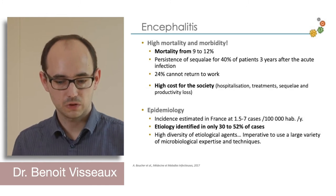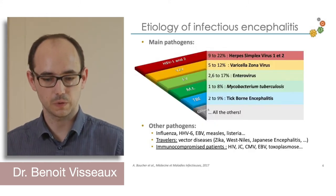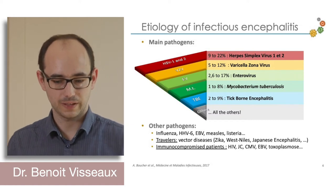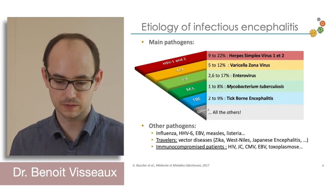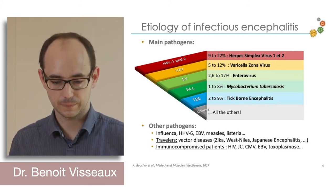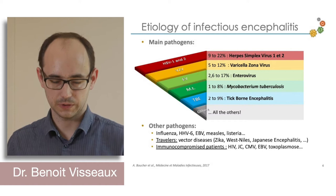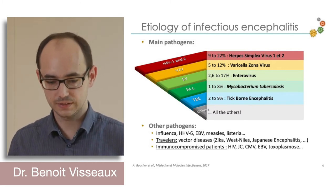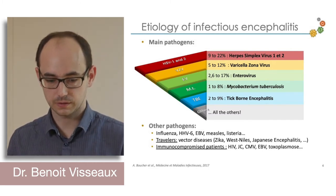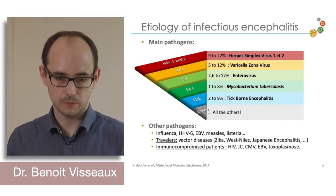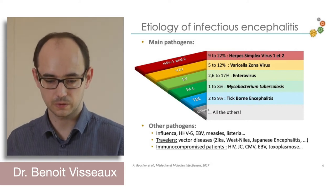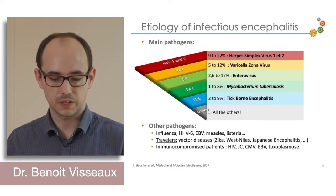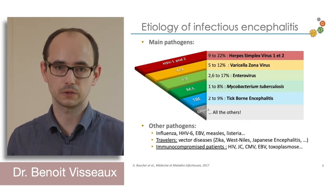The main pathogens are mostly herpes simplex viruses 1 and 2, but also varicella-zoster, enteroviruses, mycobacterium tuberculosis in specific settings, or tick-borne encephalitis, and many other pathogens: influenza, HHV-6, EBV, mycobacteria. If you have a traveler patient, vector-borne diseases such as Zika, West Nile, Japanese encephalitis, and so on. For immunocompromised patients, you also have to check HIV, HHV-6, CMV, EBV, toxoplasmosis, and so on.